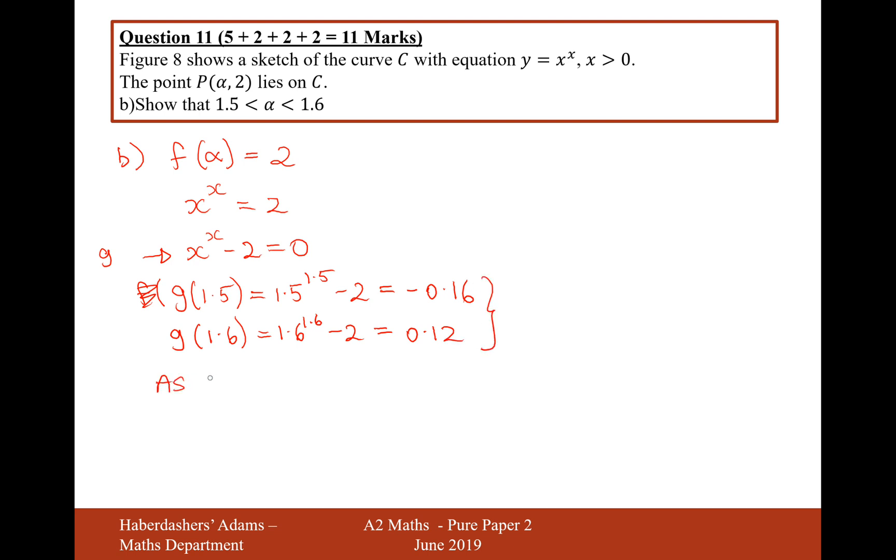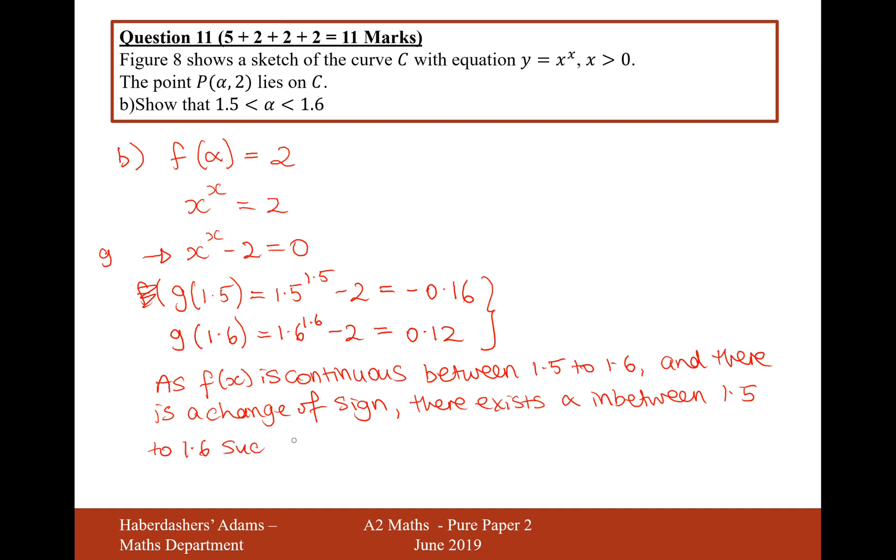As f of x is continuous between 1.5 to 1.6 and there is a change of sign, there exists alpha in between 1.5 to 1.6 such that f of alpha equals 2. Okay, so there we are. That's the answer to this question here. Let's move on to the next part.